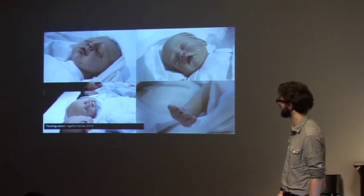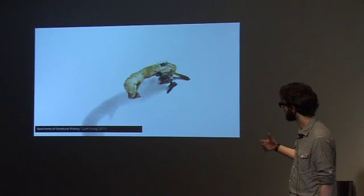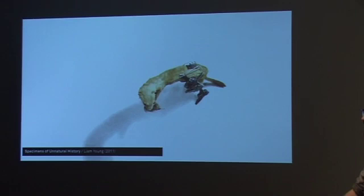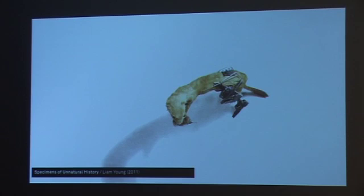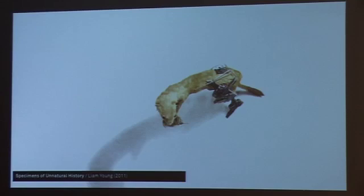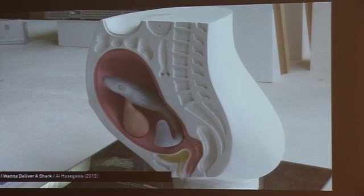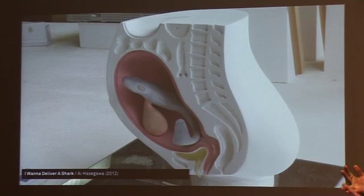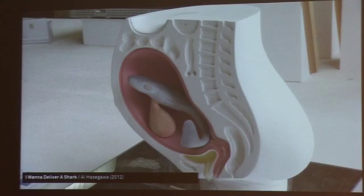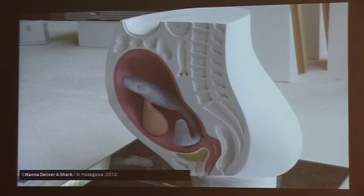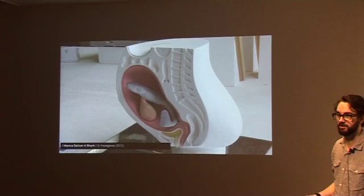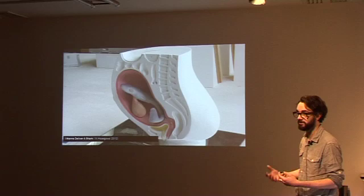Liam Young's Specimens of Unnatural History: he speculated about a future — or even a present — Galapagos Islands where technology washed up on shore is taken up by the animals who live there, and the animals start to adapt and evolve with the technology, and a brand new ecosystem comes out of it. Set up as taxidermied animals, it's really beautiful. Then there's Hasegawa's 'I Want to Deliver a Shark' — a Japanese project. She basically said: too much population of humans, lots of endangered species. If you want a child, why not give birth to an endangered species? She's been doing this project for the last few years in various iterations, and it's all based in science — she collaborates with scientists at Imperial College on actual ways this could be possible.